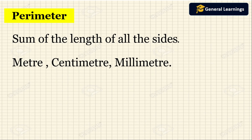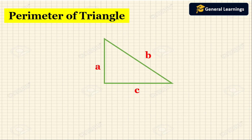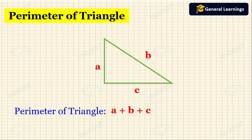Now we will see how to find the perimeter of a triangle. Here they have given a triangle with sides a, b, and c. Since perimeter is the sum of length of all the sides, the length here is a, b, and c. So the perimeter of the triangle will be a plus b plus c.